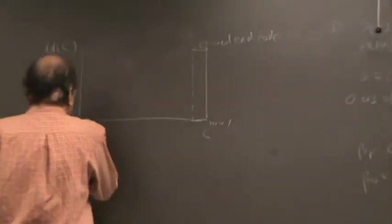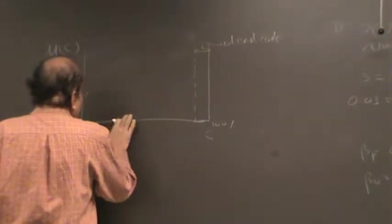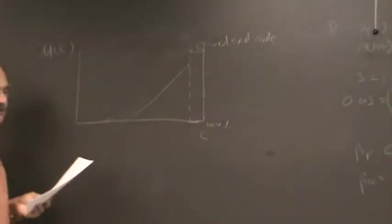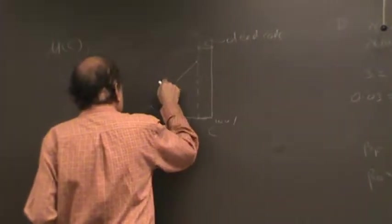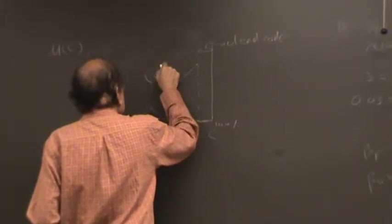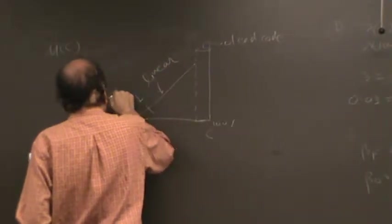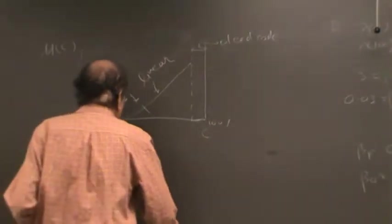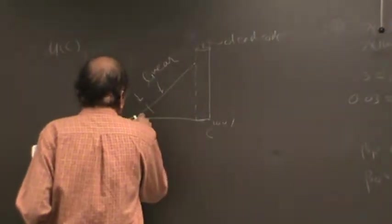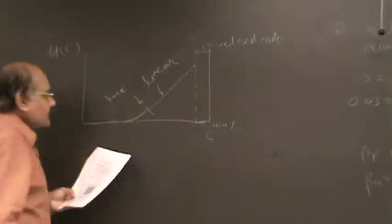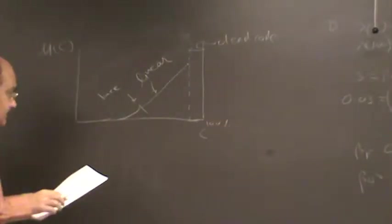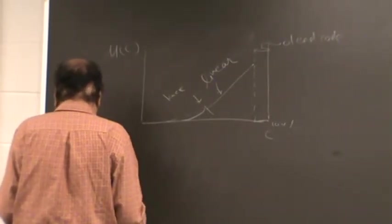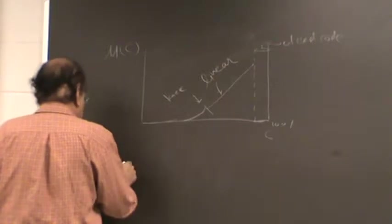So according to the model, it will look like this. This is your linear region, and here is the knee. The whole complete expression is a little bit complex, which looks like this.